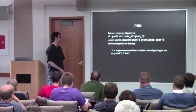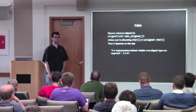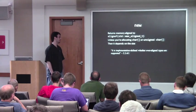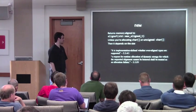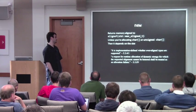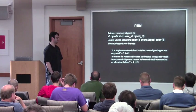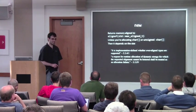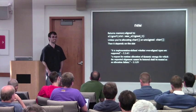It is implementation-defined whether over-aligned types are supported. If you look at `new`, it cannot possibly observe the alignment — the global allocator `new` doesn't know what it is. However, the standard also states in section 3.11 that a request for runtime allocation of dynamic storage for which the requested alignment cannot be honored shall be treated as an allocation failure. These seem to contradict, but the intent is that this applies to fundamental alignment.